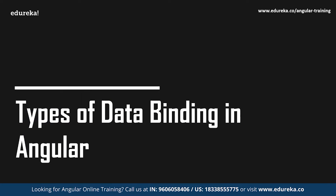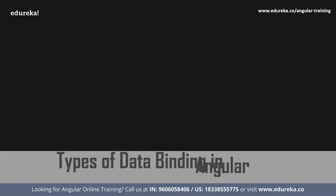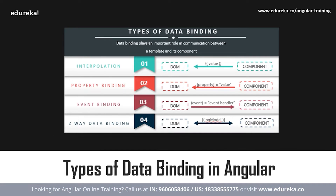Angular allows both one-way as well as two-way data binding. One-way data binding is a simple type where you are allowed to manipulate the views through the models. This implies that making changes to the TypeScript code will be reflected in the corresponding HTML. In Angular, one-way data binding can be achieved through interpolation or string interpolation, property binding, and event binding. Two-way data binding, on the other hand, allows synchronization of data so that views can be updated using the models and models can be updated using the views, meaning your application will be able to share information between a component class and its template.